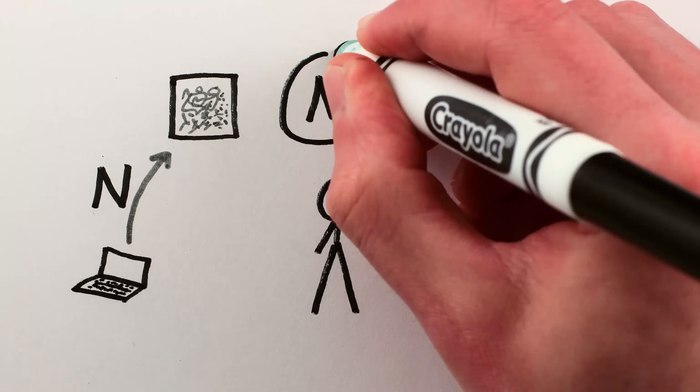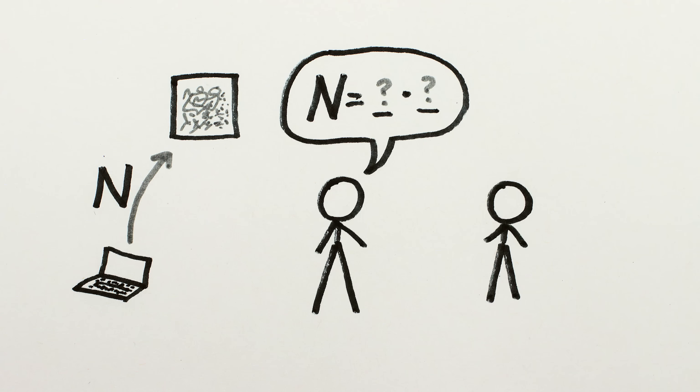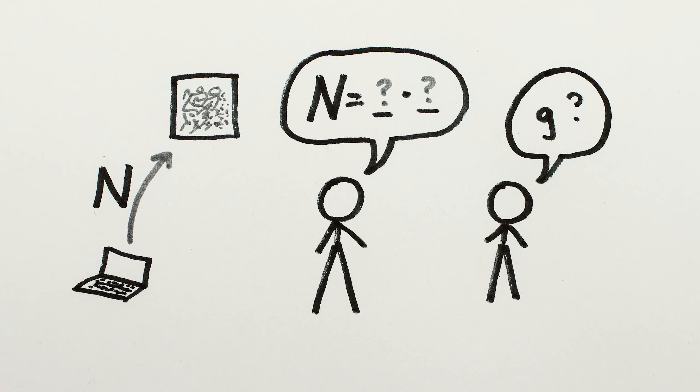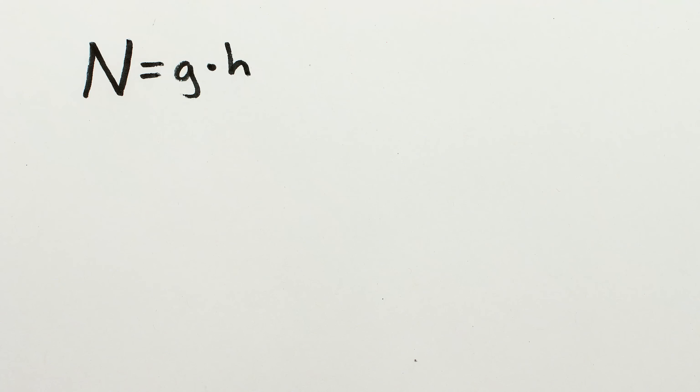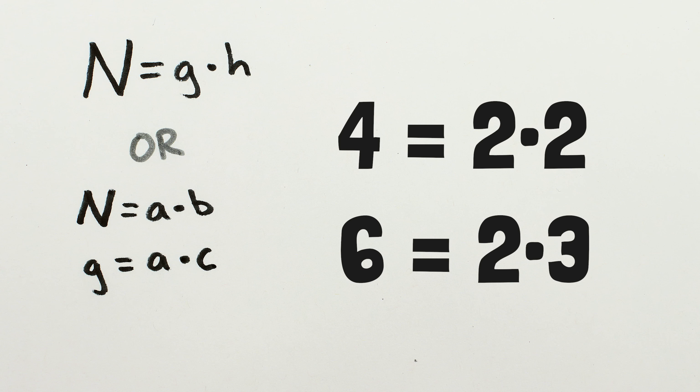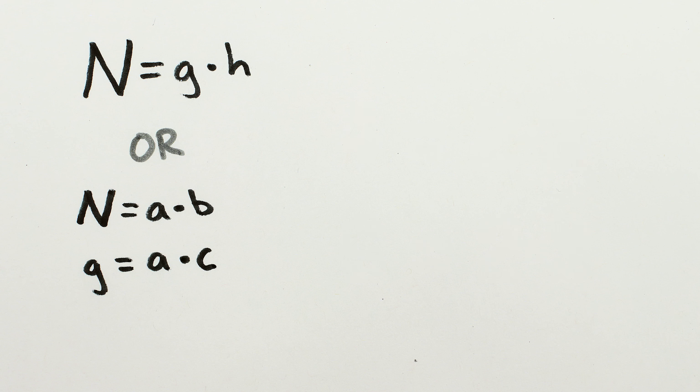If you don't know what the factors are, which you don't, you can make a guess. Just pick some number g that's less than n. We actually don't need the guess to be a pure factor of n. It could also be a number that shares some factors with n, like how 4 isn't a factor of 6 but shares a factor with it.